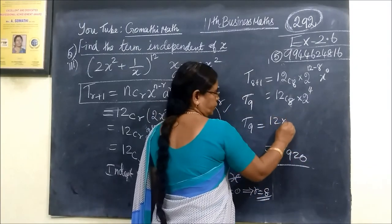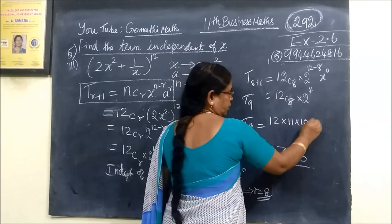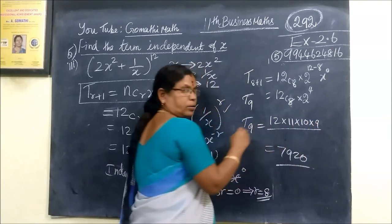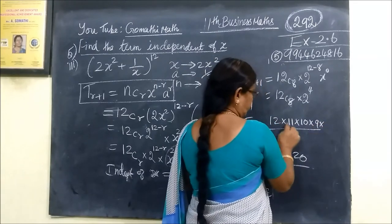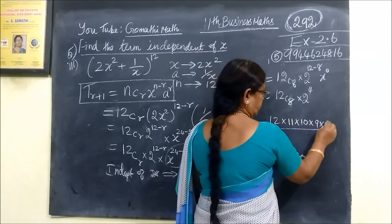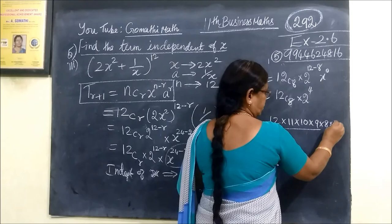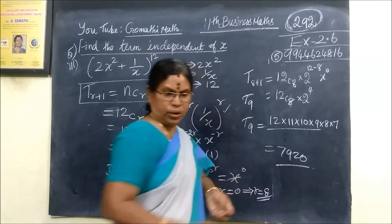So this is 12C_8, we can calculate it. 12 times 11 times 10 times 9, divided by 4 times 3 times 2 times 1. This equals 495.